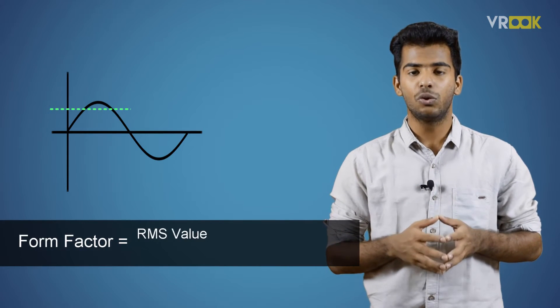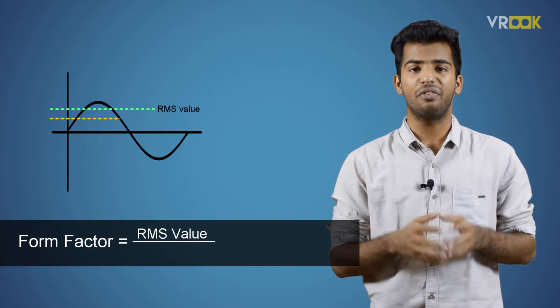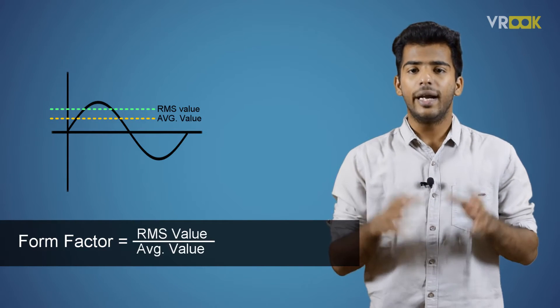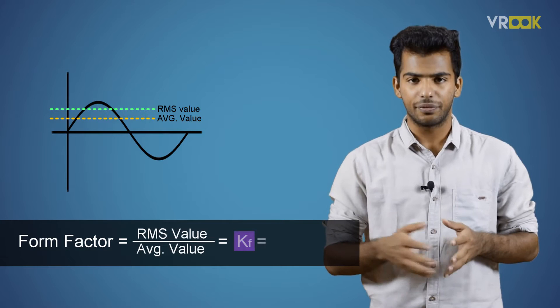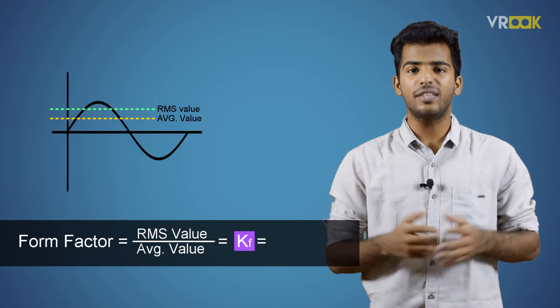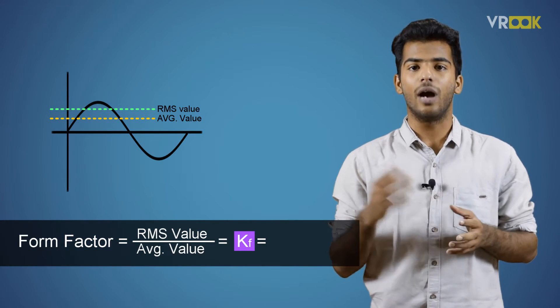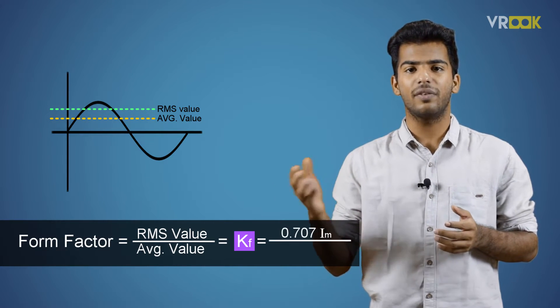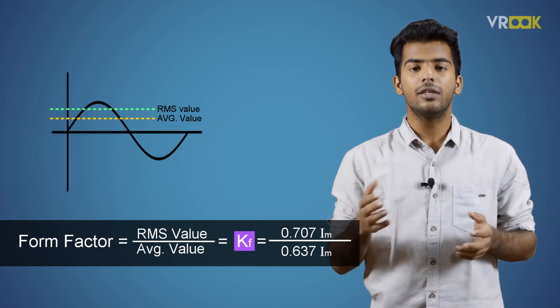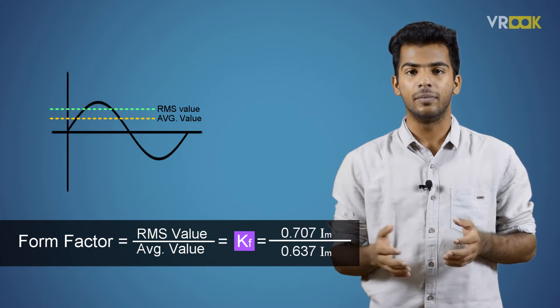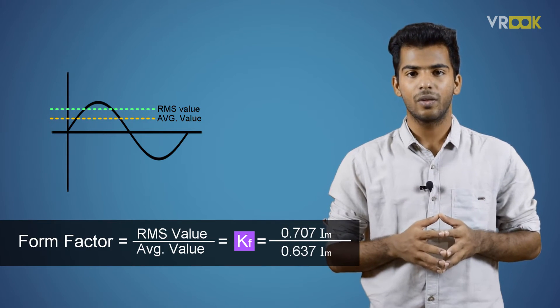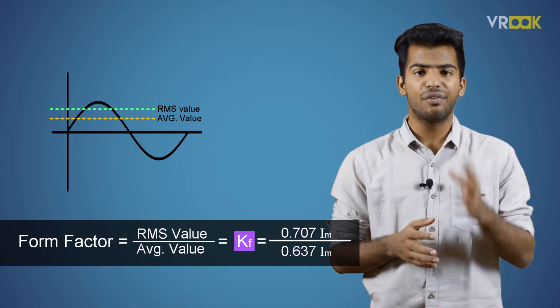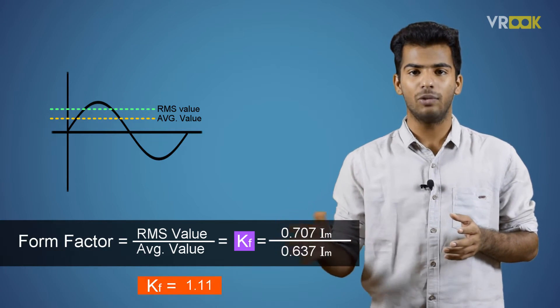The form factor is the ratio of effective value or RMS value to the average value of an alternating quantity. It is denoted as Kf. So, if we substitute the values of RMS value and average value, it will be 0.707 Im divided by 0.637 Im the average value. After calculation, the form factor will be 1.11.